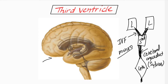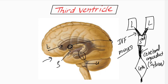Correlating with the diagram: here is the lateral ventricle, the third ventricle, and the fourth ventricle. The communication between the lateral and third ventricle is the interventricular foramen or foramen of Monro. The third ventricle connects with the fourth ventricle through the cerebral aqueduct.